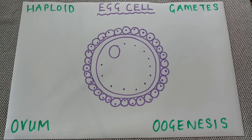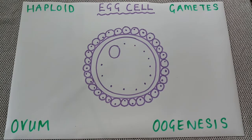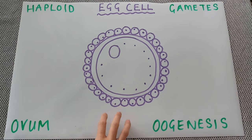With the egg cell, what you need to be able to do is annotate a picture of the cell, or identify the different parts of it. You do not need to be able to draw this out. We're going to annotate the picture I have already drawn here of the egg cell.